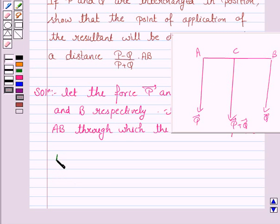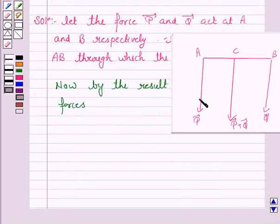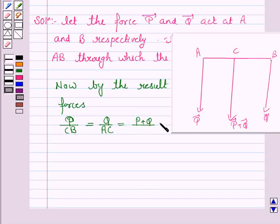Now by the result of like parallel forces we have P upon CB is equal to Q upon AC is equal to P plus Q upon AB.